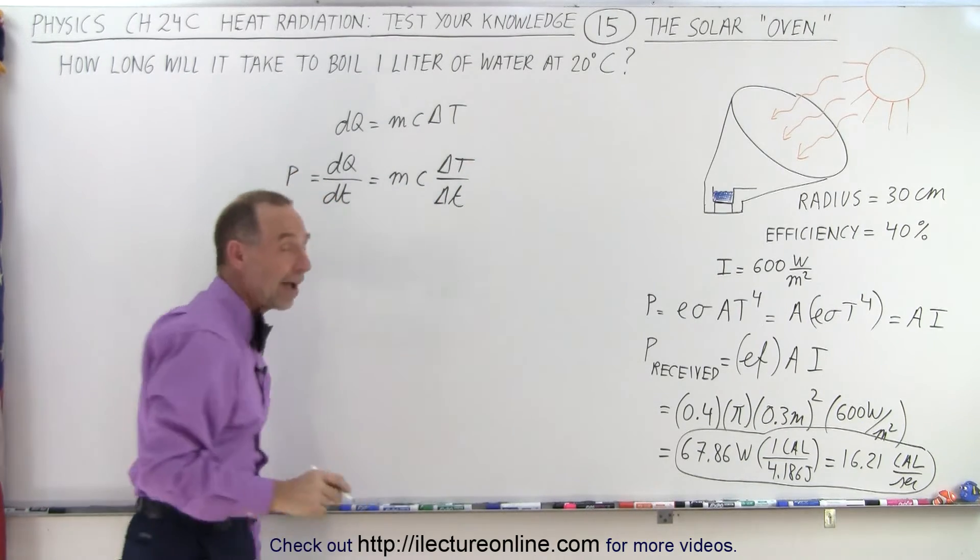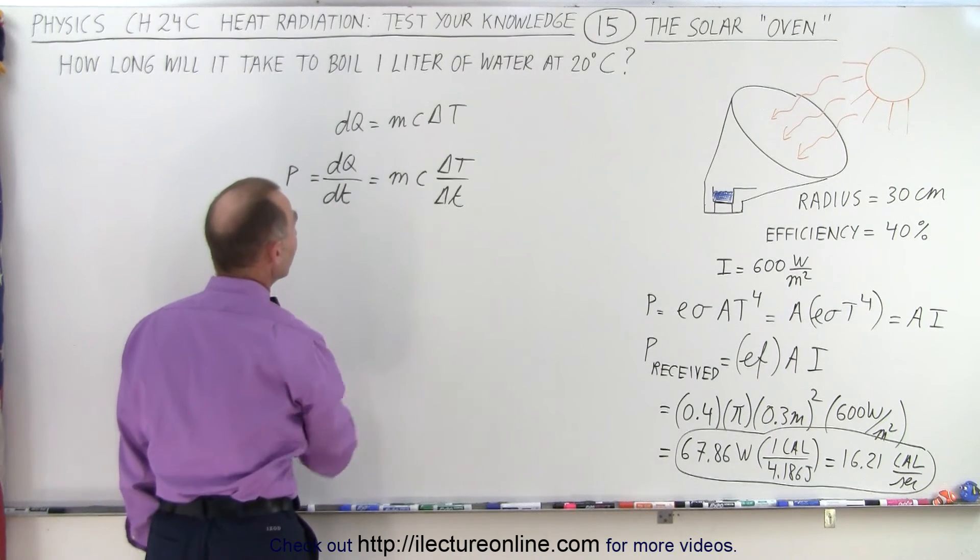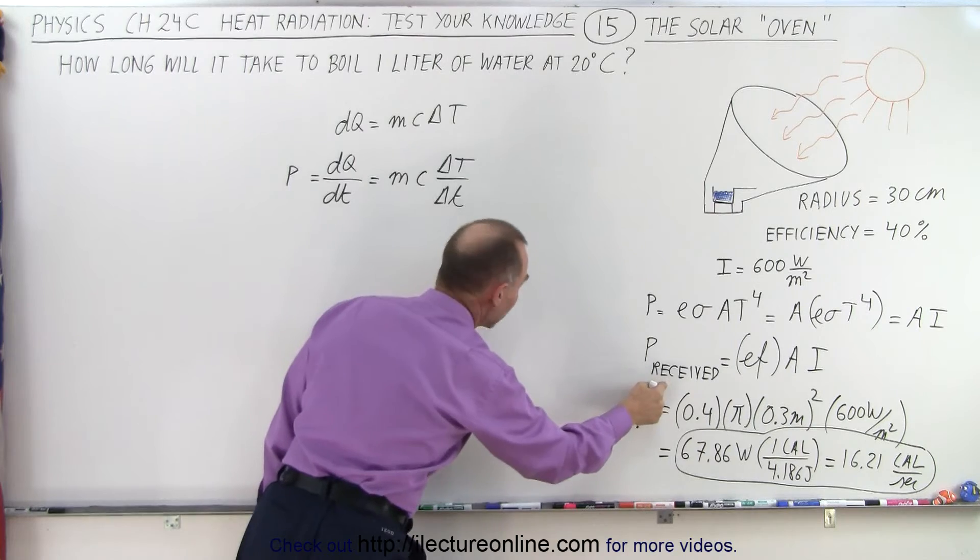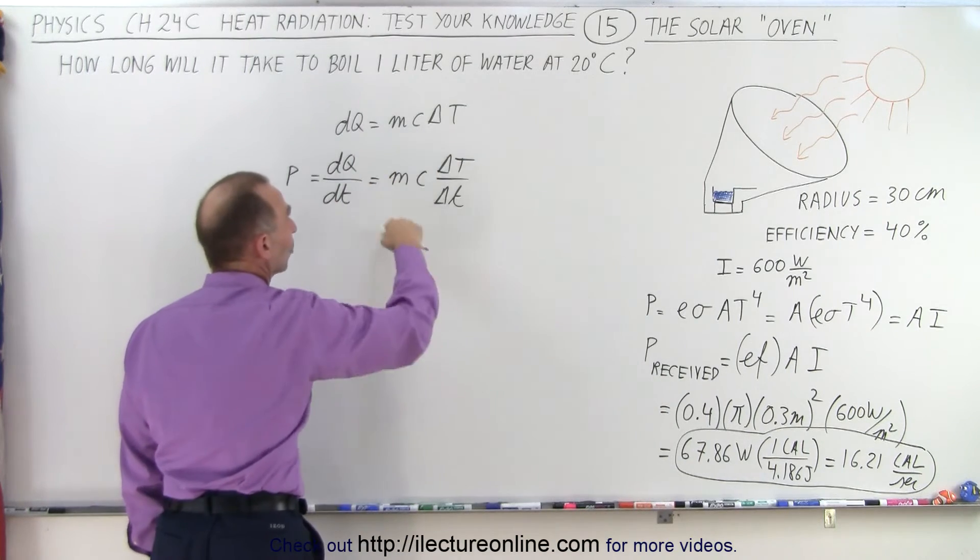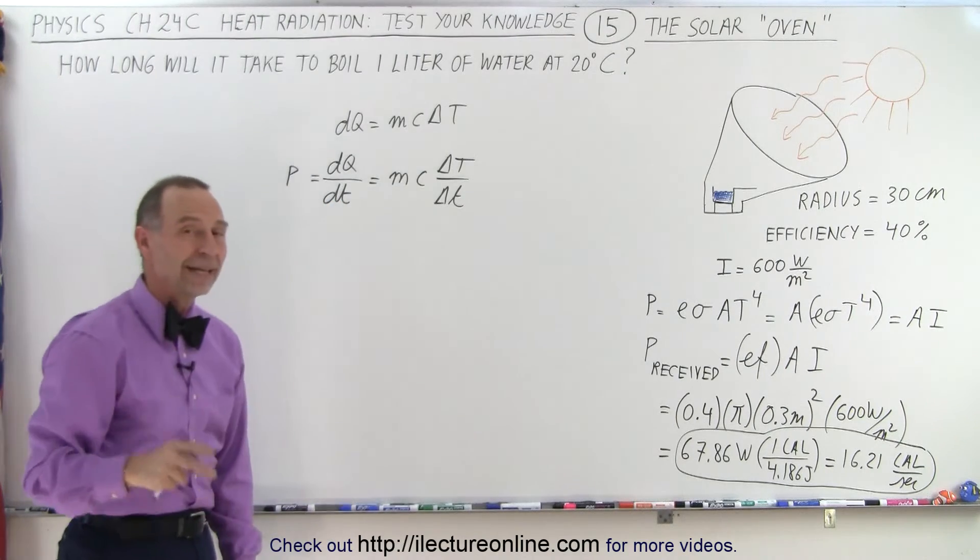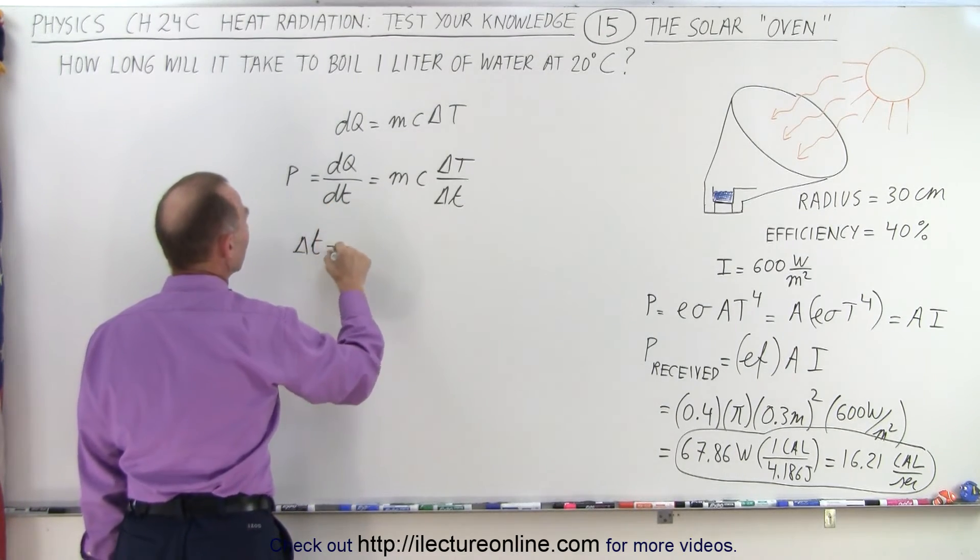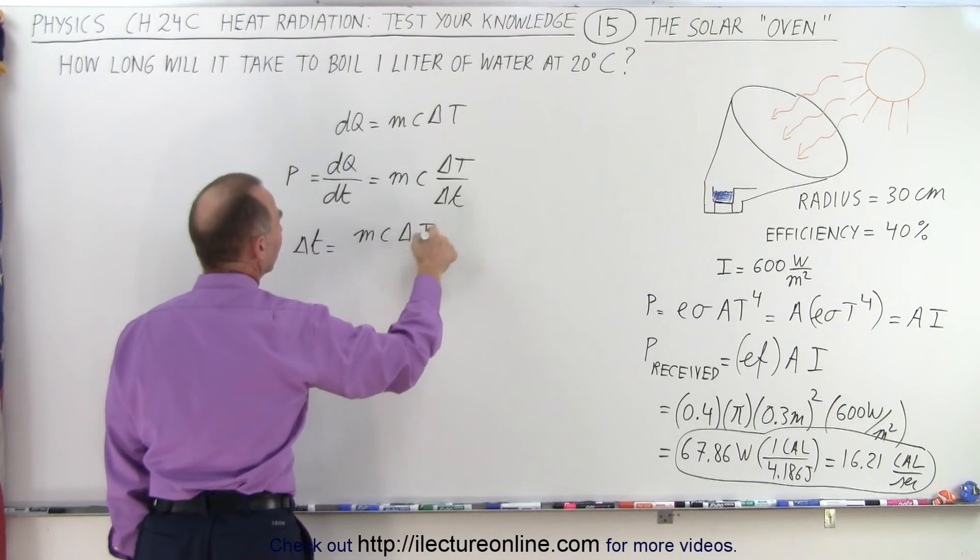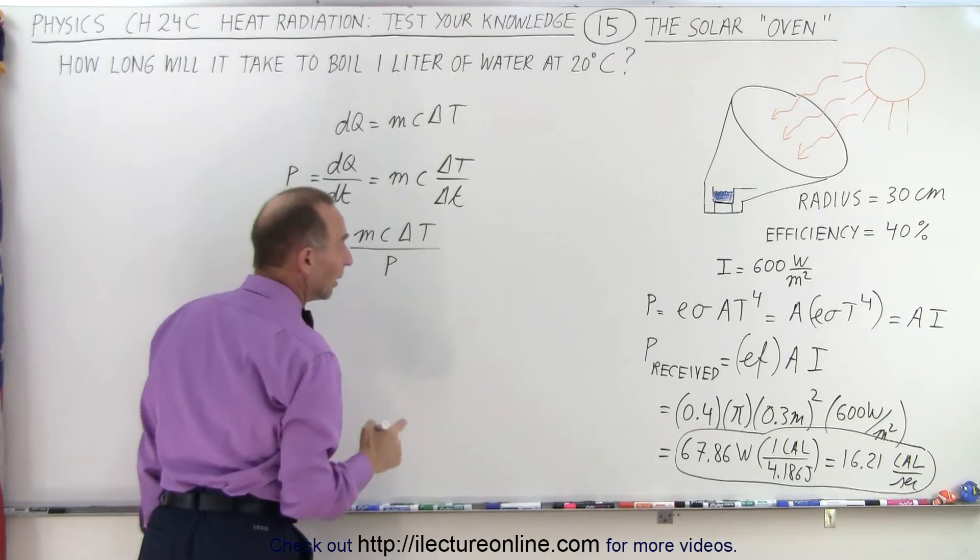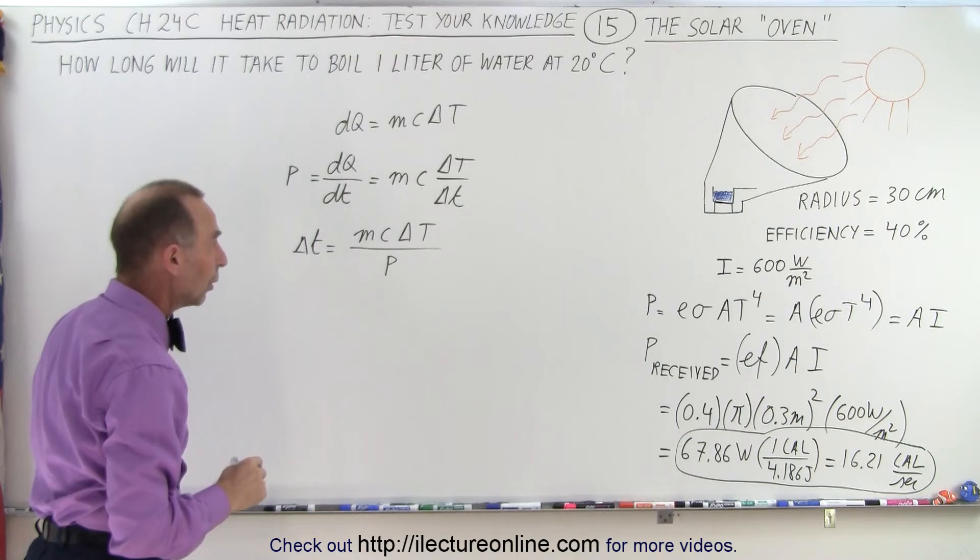So the power input is equal to dq/dt, which is equal to mc delta T divided by delta t. This is, of course, temperature, and that's time. So when we divide both sides of the equation by delta T or dT, then we can set the power, which we have right here, equal to some things in terms of how much the temperature changes with respect to time. And then we can solve that equation for delta t. So we say delta t is equal to mc delta T, that's a change in temperature, divided by the power.